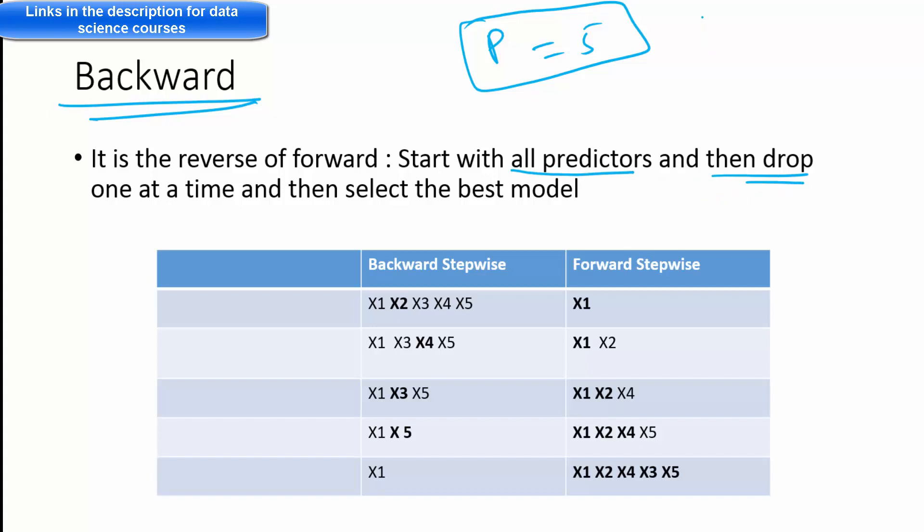So in forward, we start with one, then you go to a two variable model, three variable model and so on. And it's just the opposite. You start with p number of variables and then p minus 1, p minus 2 and so on.